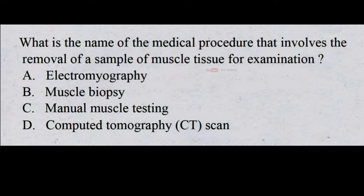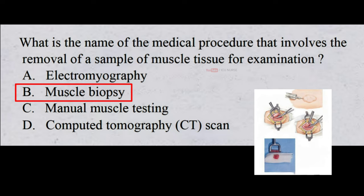What is the name of the medical procedure that involves the removal of a sample of muscle tissue for examination? A. Electromyography. B. Muscle biopsy. C. Manual muscle testing. D. Computed tomography scan. And the correct answer is B. Muscle biopsy. Muscle biopsy is a procedure used to diagnose diseases involving muscle tissue, where a small sample of muscle tissue is removed for examination.